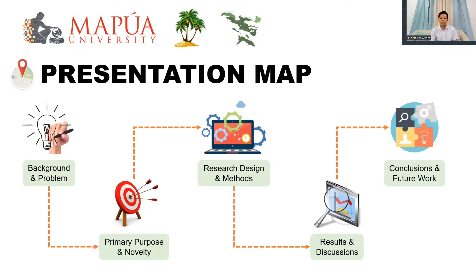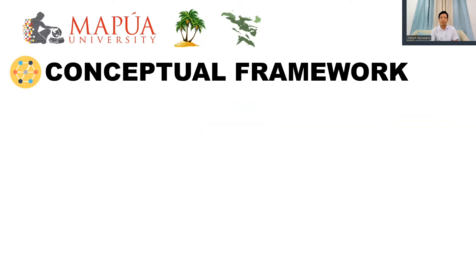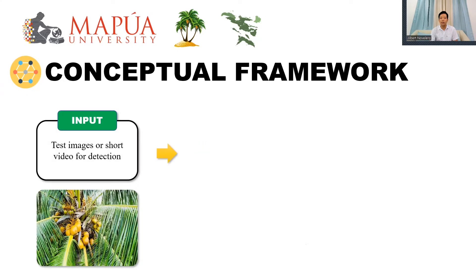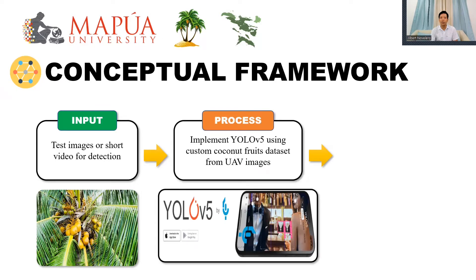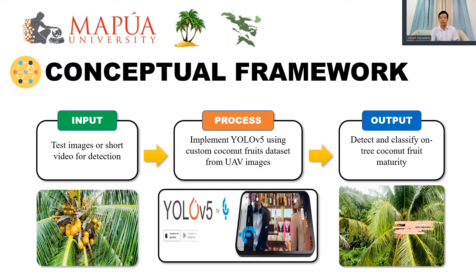Here is the conceptual framework of the system. The input can be an image or video containing coconut trees with fruits for detection and classification. A custom dataset of coconut fruits from UAV images was used to train the YOLOv5 network for identification and classification of coconut fruit maturity in real-time. The system's output is real-time detection of on-tree coconut fruits, classifying each fruit based on its maturity.